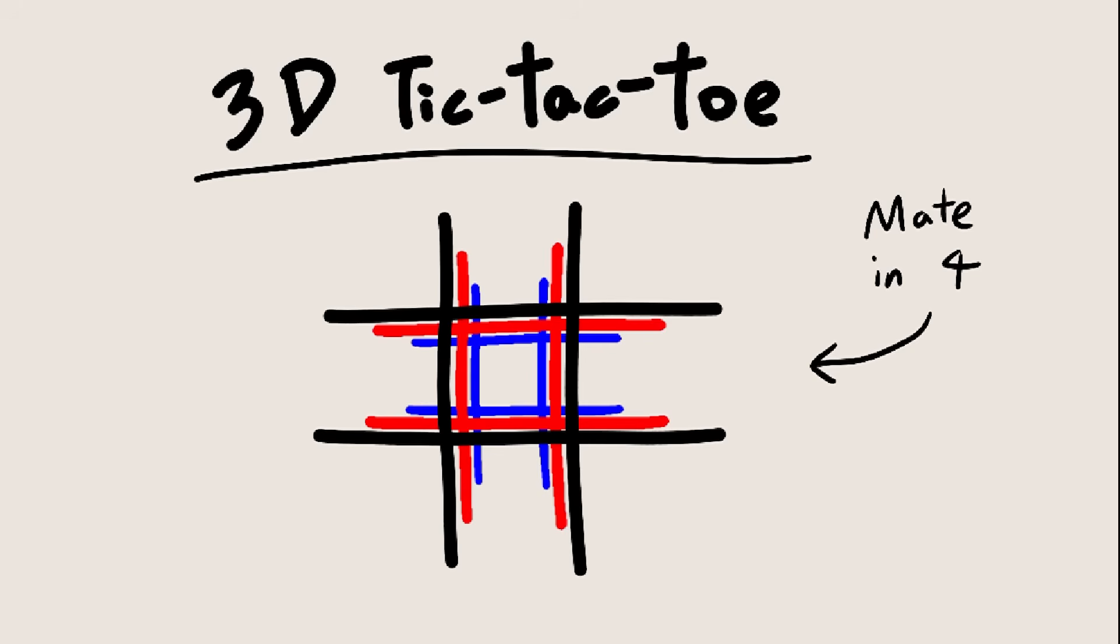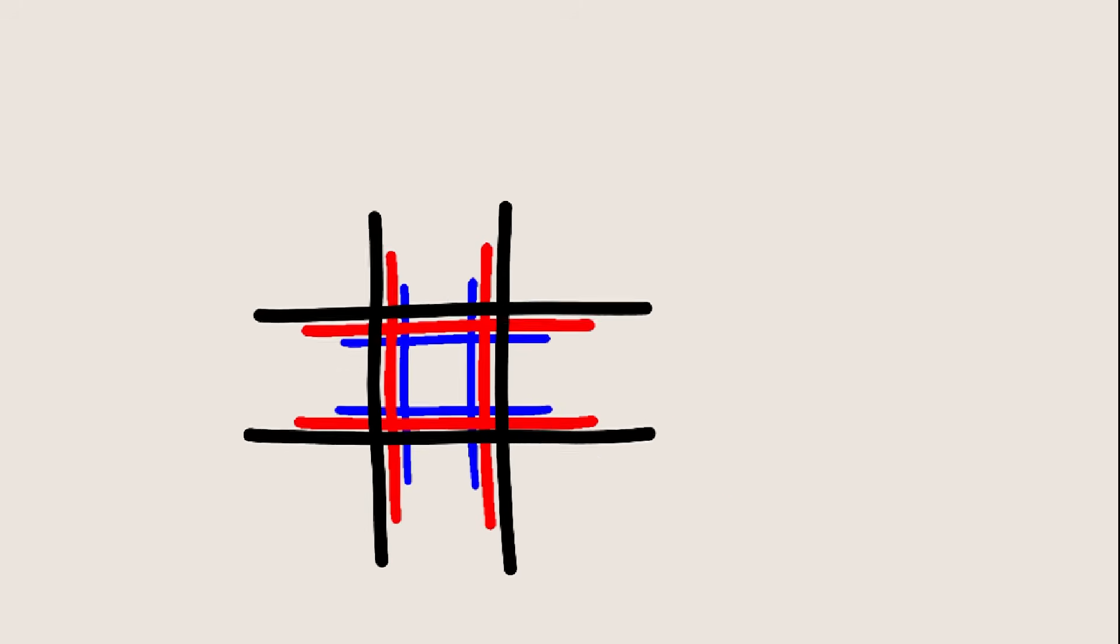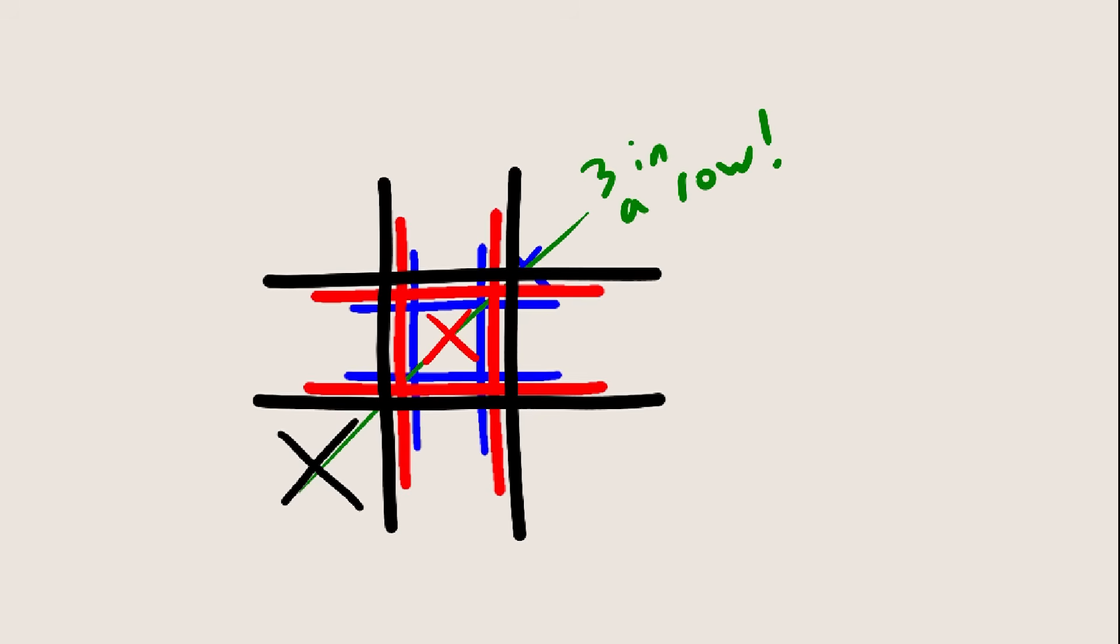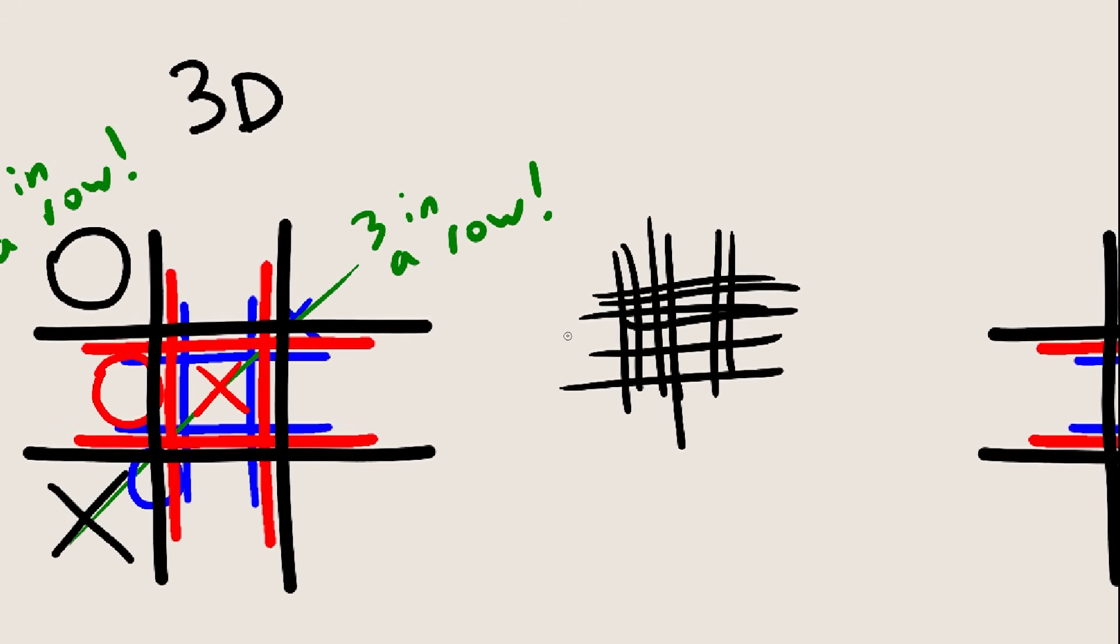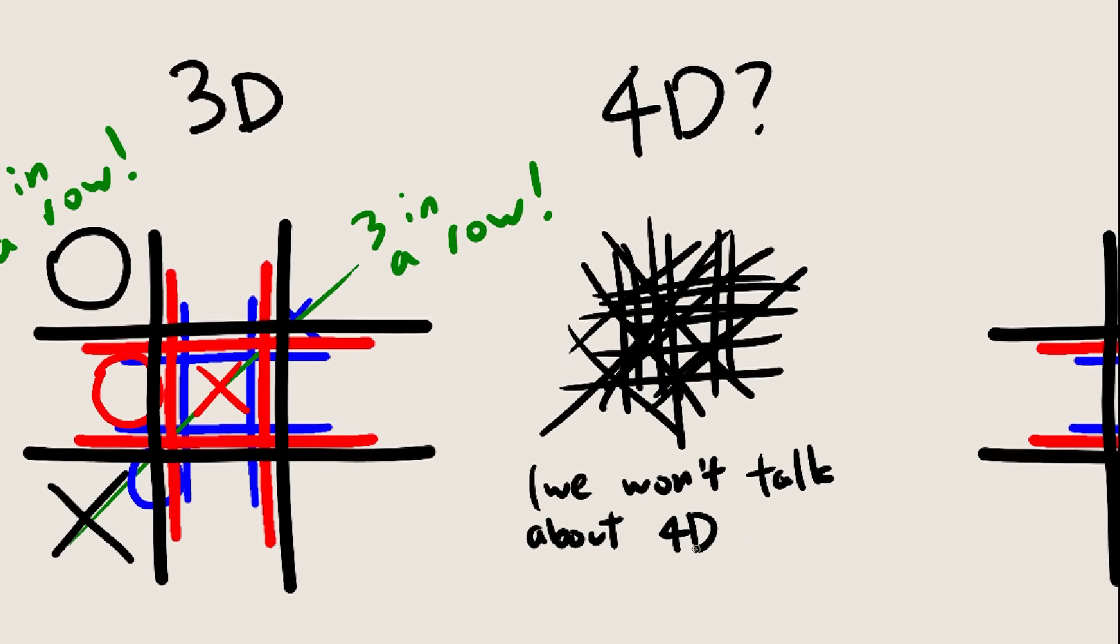Anyway, player 1 starts by placing an X, player 2 places an O, and then they alternate back and forth, and whoever gets three in a row first wins. And yes, stuff like this counts as three in a row. As long as they're all in a line, it's considered three in a row. Also, keep in mind that we can increase the number of dimensions however much we want. Nothing about tic-tac-toe stops working when you add a fourth dimension, or even more.